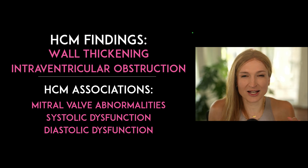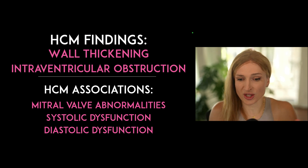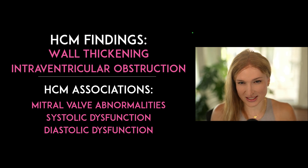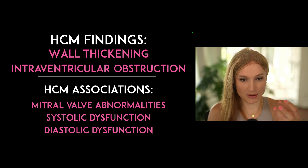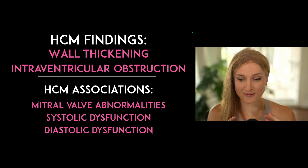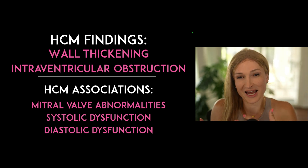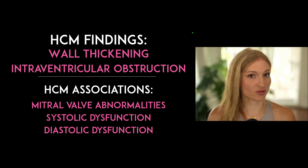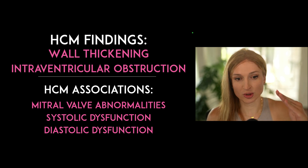It's not just the walls — there are a lot of other things that can go on. It can affect the actual architecture and the way that the muscle grows, and it's been associated with abnormalities around the valve itself, such as prolonged cordae, prolapse, and papillary muscles inserting directly into the mitral valve. But the big thing we're going to look for is wall thickening and intraventricular obstruction to flow, specifically through the LVOT.